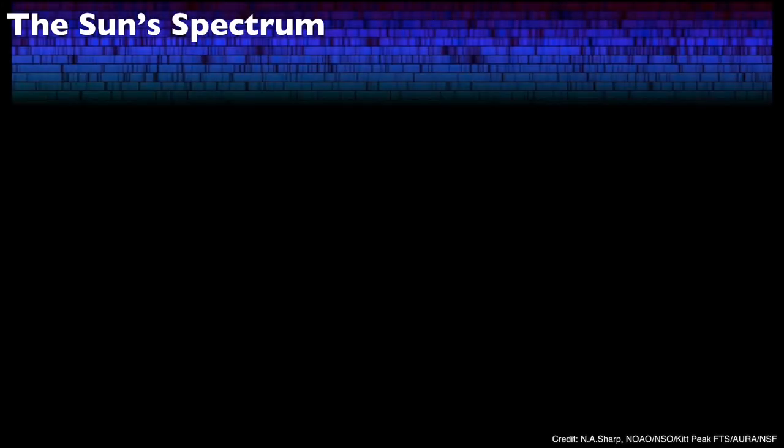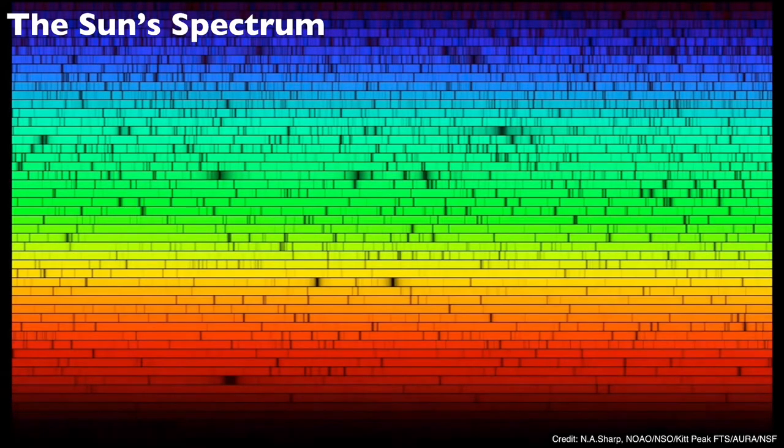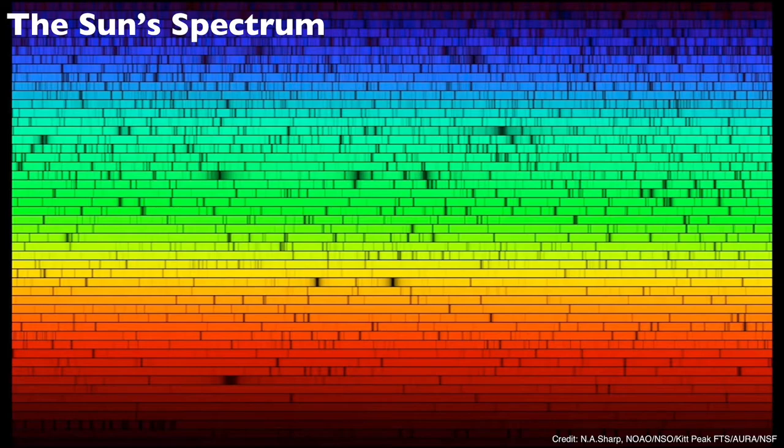Now this is the full absorption spectrum of the sun, showing us both the extremely prominent Fraunhofer lines, as well as those that are hardly noticeable and would require a second look.